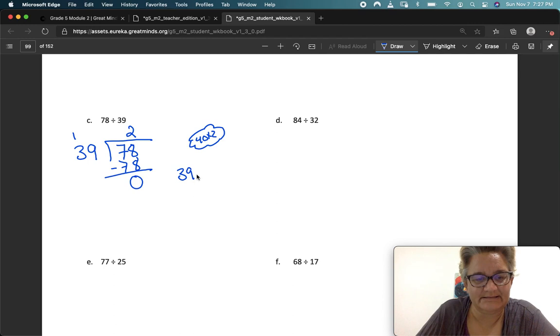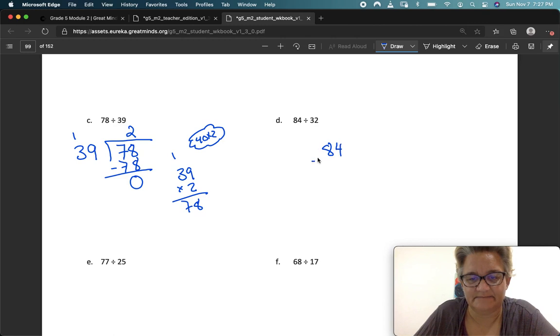And I have a complete answer here, no remainders. So let's check our work. 39 times 2 is 78. So we did it. Next one, dividend goes inside, divisor goes outside.